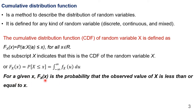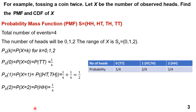For a given F, F_X(x) is the probability that the observed value of X is less than or equal to x. Let us try to understand and differentiate between PMF and CDF. We have taken an example of tossing a coin twice. Here, X is the number of heads observed.